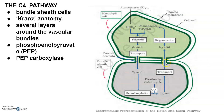The C4 pathway is also called the Hatch and Slack pathway, discovered between 1965 and 1967. It is mainly operational in plants growing in dry tropical regions, like maize, sorghum, and sugarcane. In this pathway, the first stable product of C4 plants is oxaloacetic acid, which is why it is called the C4 pathway.